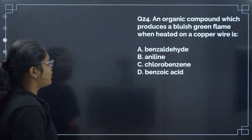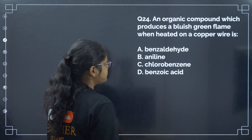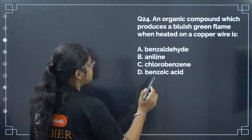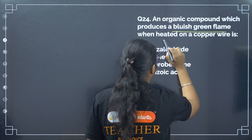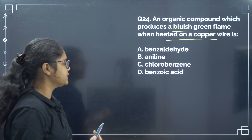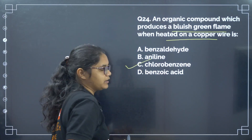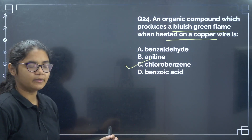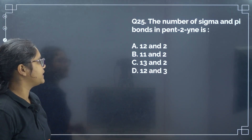Next: an organic compound which produces a bluish-green flame when heated with copper wire. This is a Beilstein test question. Chlorobenzene produces a blue-green flame. Correct answer is option number C.